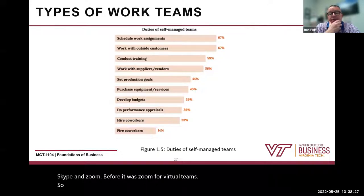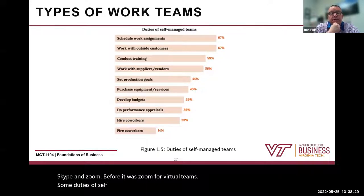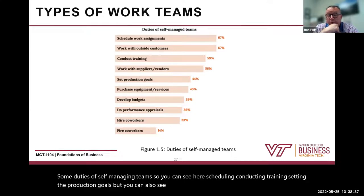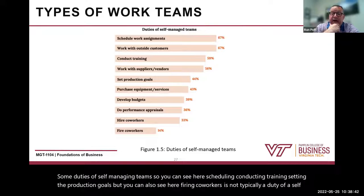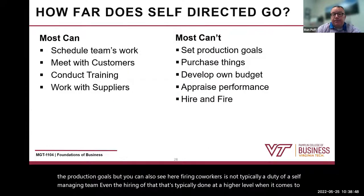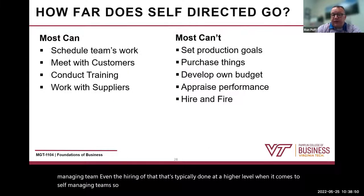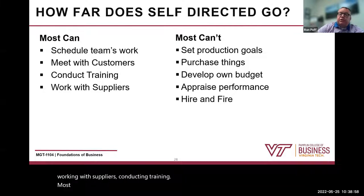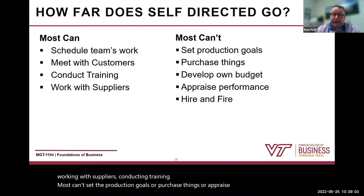Some duties of self-managing teams — you can see here: scheduling, conducting training, setting production goals. But firing co-workers is not typically a duty of a self-managing team, nor is hiring. That's typically done at a higher level. Self-directed or self-managing teams can schedule their work, work with suppliers, conduct training — but most can't set production goals, purchase things, appraise performance, or handle hiring and firing.